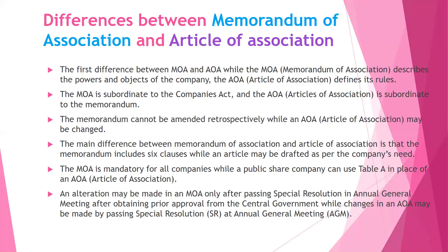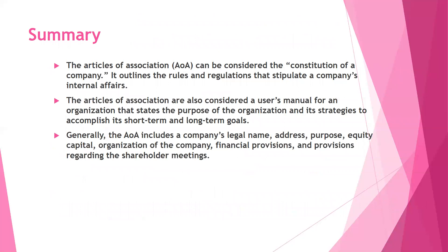The last difference discussed in this session: any alteration in the Memorandum of Association may be made only after passing a special resolution at the Annual General Meeting and after obtaining prior approval from the central government. Whereas any changes in the Articles of Association may be made by passing a special resolution at the Annual General Meeting — no central government approval is required.